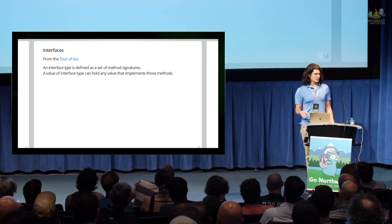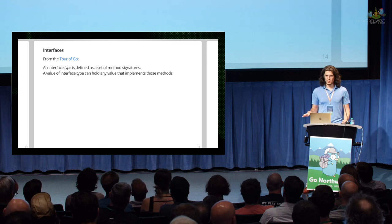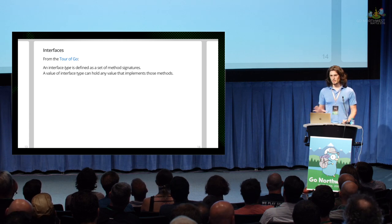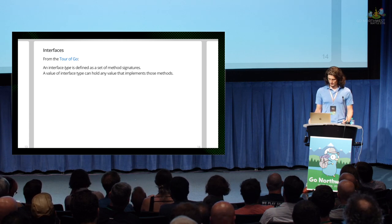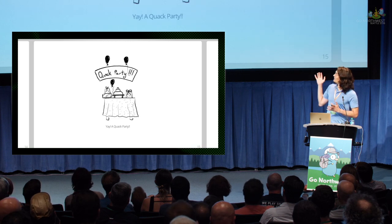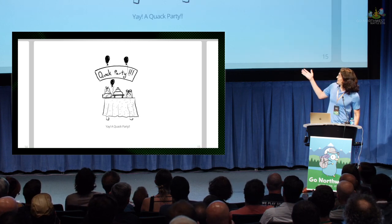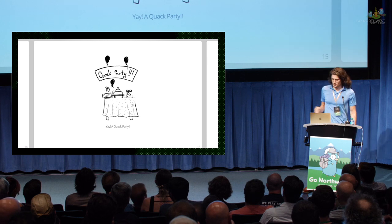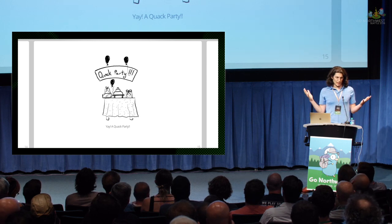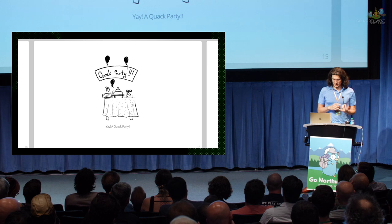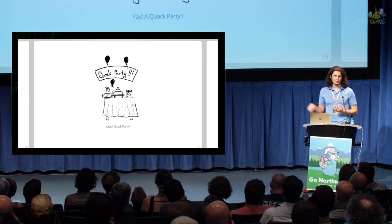So what are interfaces? From the Tour of Go — the de facto interactive website to learn the language — it has this definition: an interface type is defined as a set of method signatures, and an interface type can hold any value that implements those methods. As a new gopher with no background in interfaces, this confused me. So let's see if we can clarify with a metaphorical example. Let's imagine that there exists a thing called a quack party. You've got cake, presents, balloons.